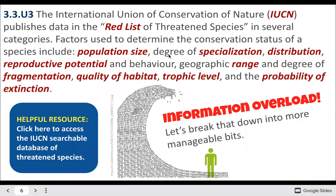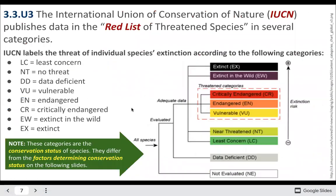The IUCN, which is an international governmental organization, produces a Red List that tells you the conservation level of different species based on varying factors. Here are the different levels of conservation status they attribute.